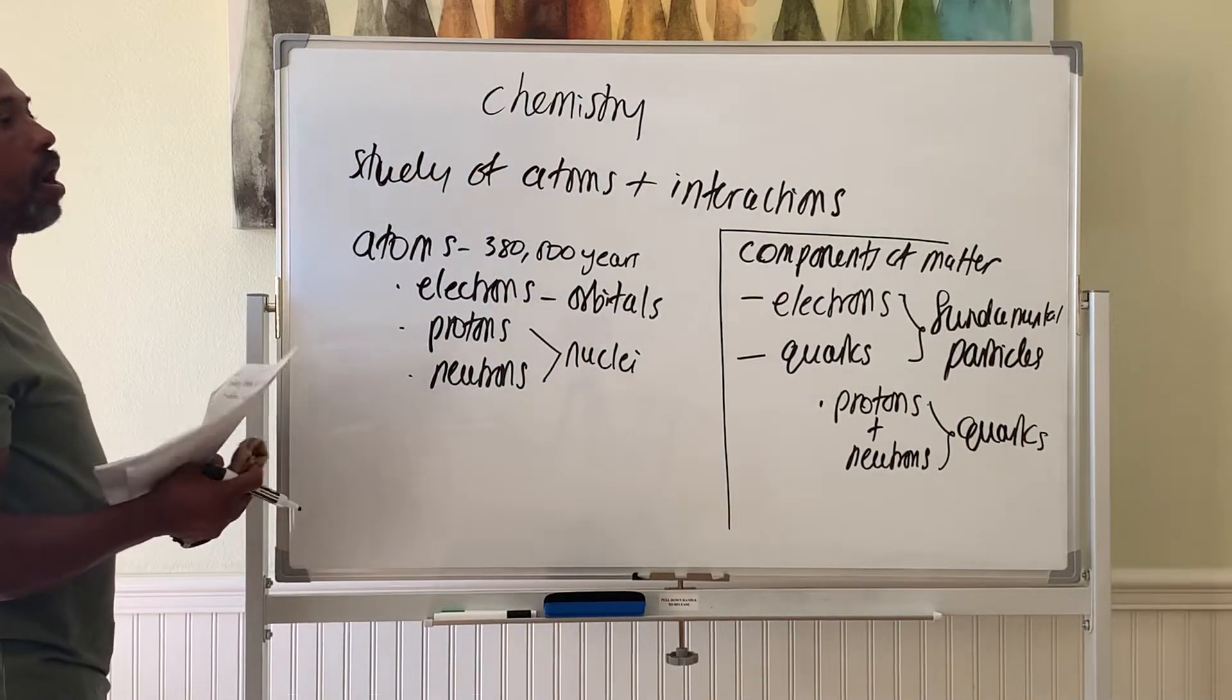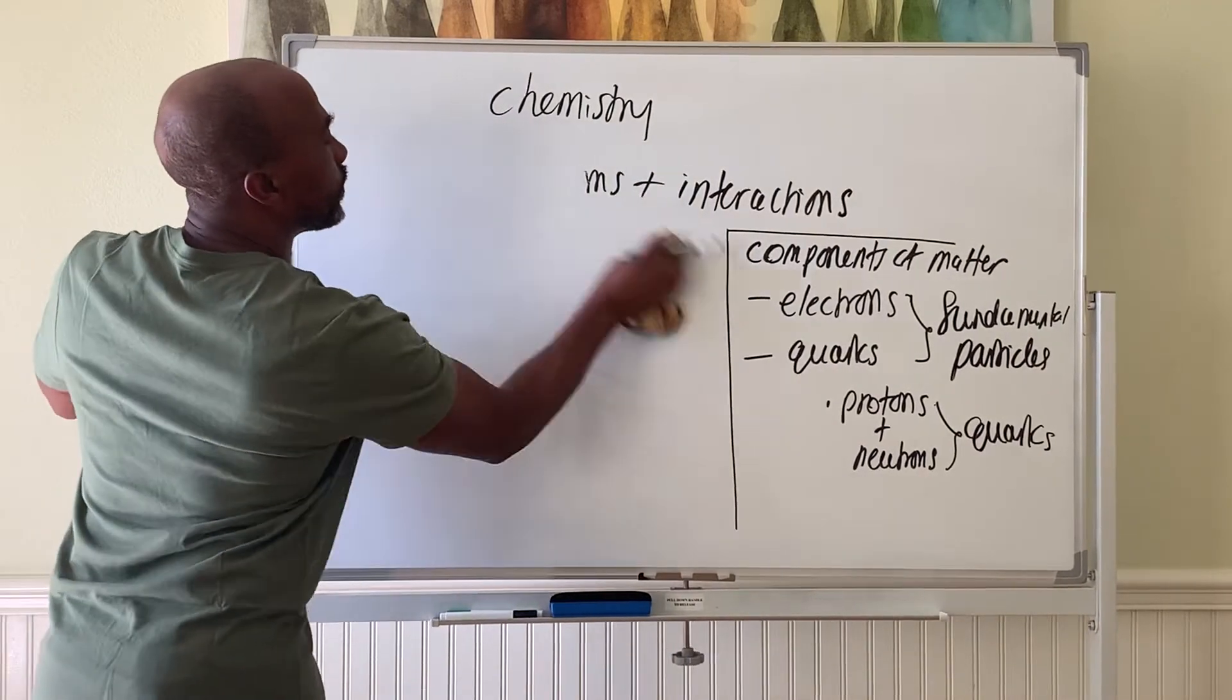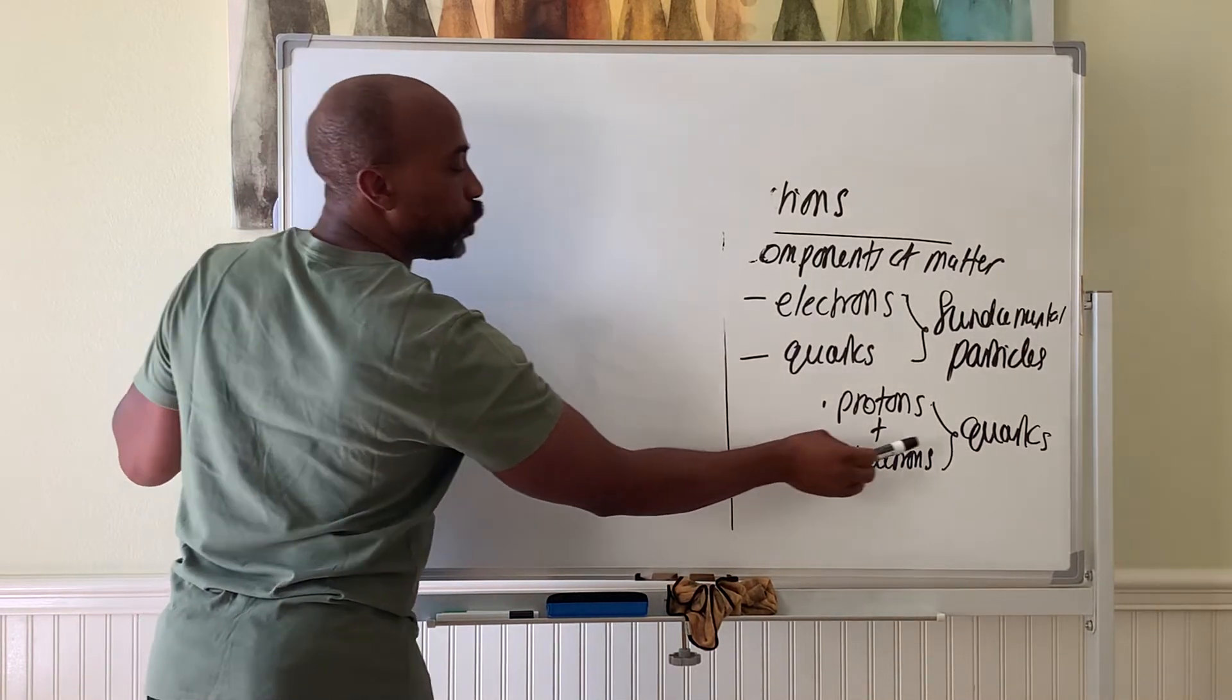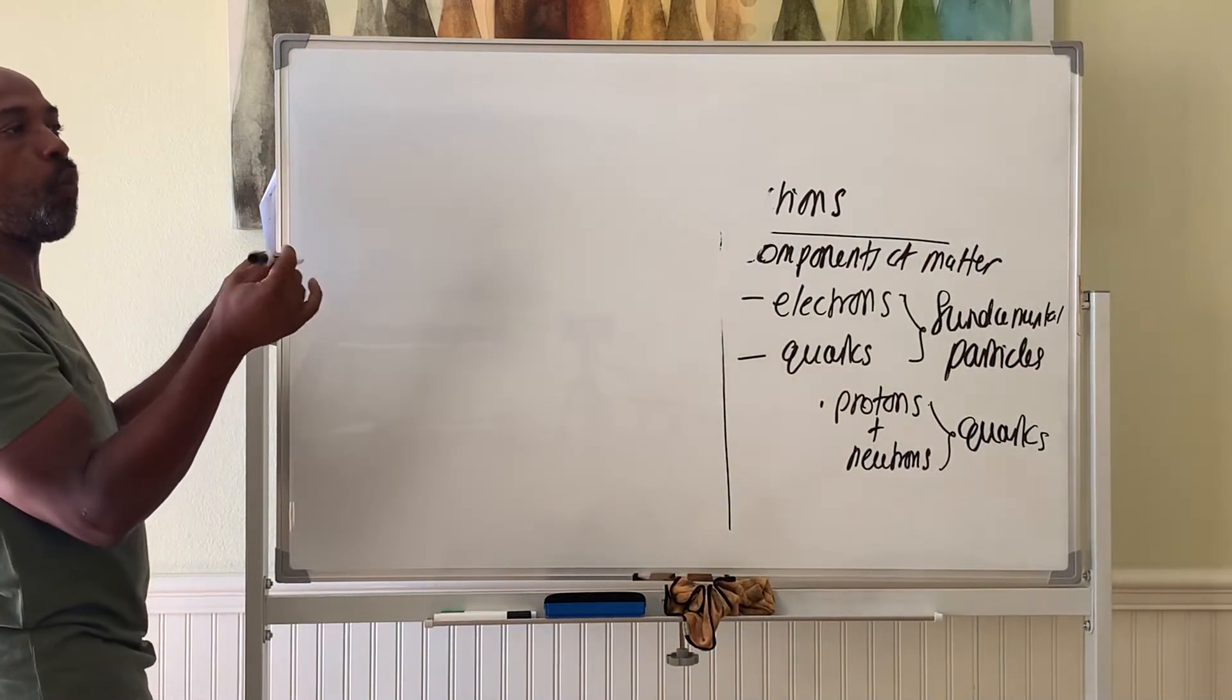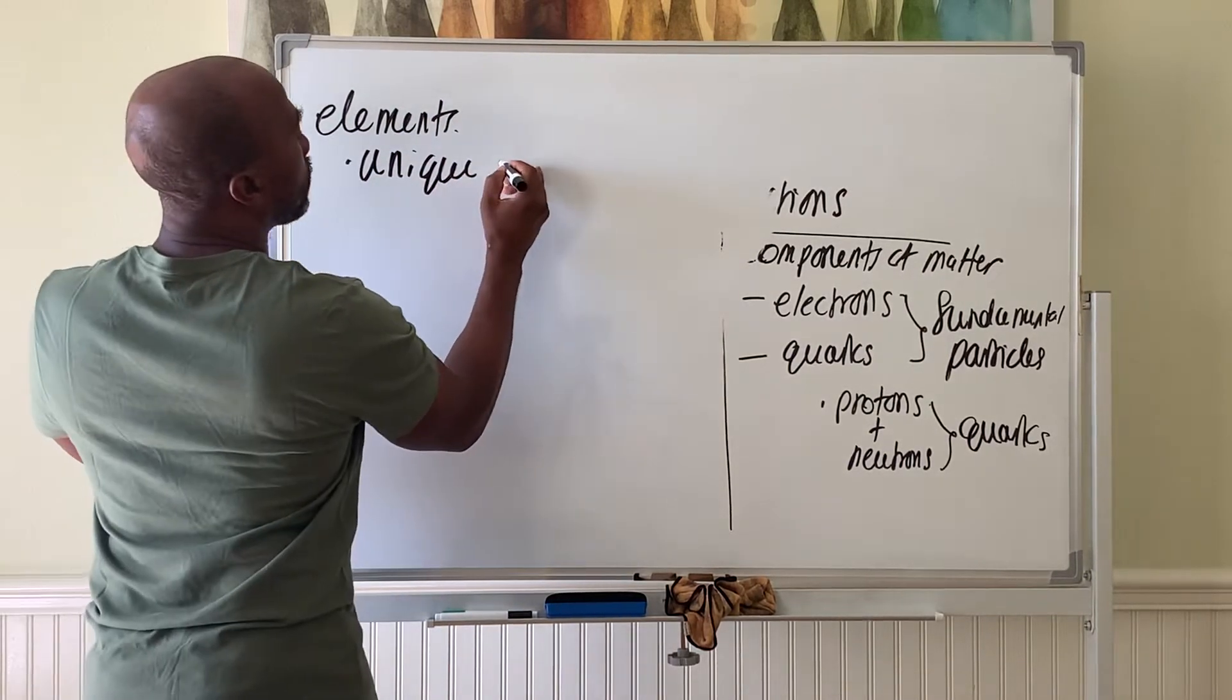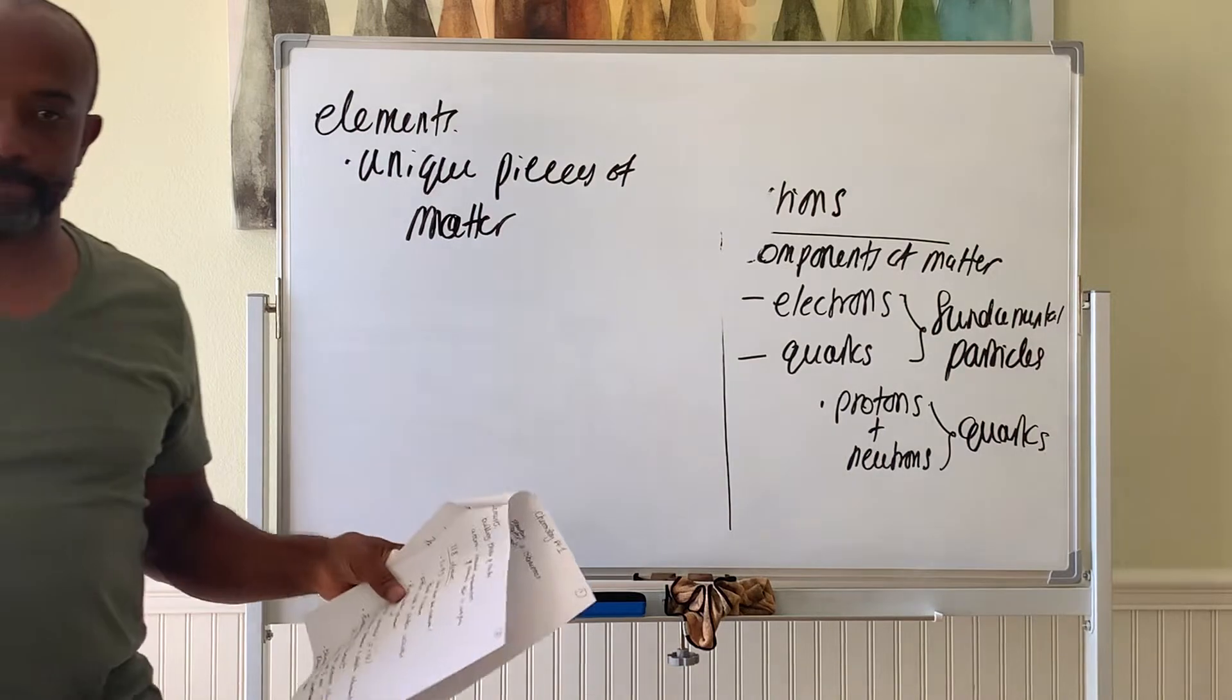Elements. So we had electrons and quarks, quarks form protons and neutrons, protons and neutrons form nuclei, and nuclei plus electrons form atoms. And atoms really are the elements that make up the universe. Elements are unique pieces of matter, meaning an element of carbon is different from an element of hydrogen.